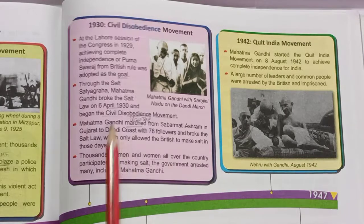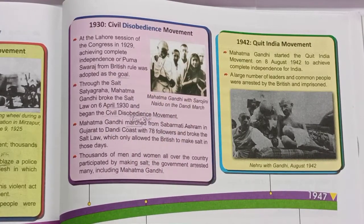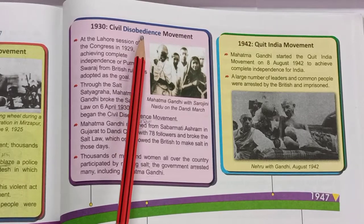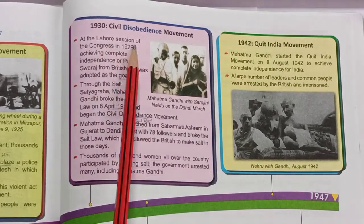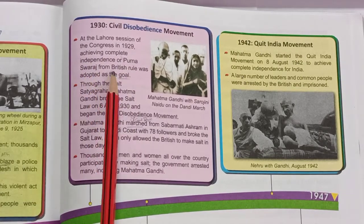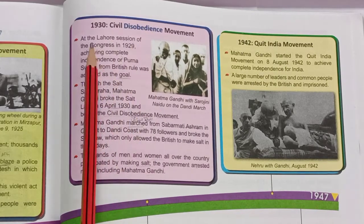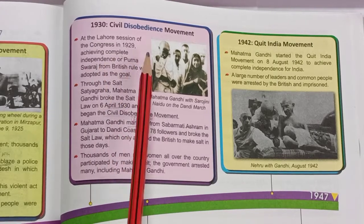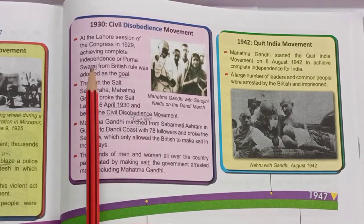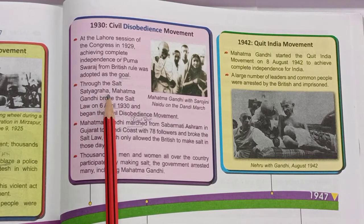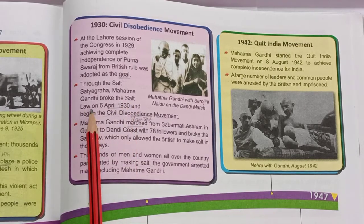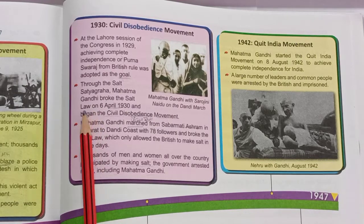Next is 1930 — the Civil Disobedience Movement. 'Disobedience' means not obeying — not following the laws made by others. At the Lahore session of Congress in 1929, achieving complete independence — Purna Swaraj — from British rule was adopted as a goal.